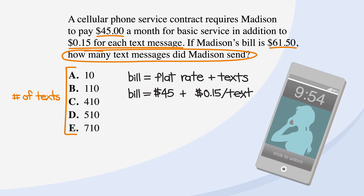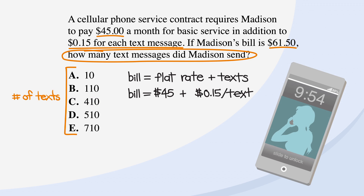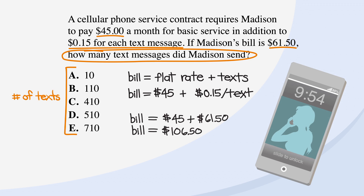Remember, our next step is to start with the middle choice, answer C, and plug in the values we're given. C says that our customer sends 410 texts. If Madison paid 15 cents per text, she paid 410 times 15 cents, or $61.50 for the text messages. That sounds like it matches, right? Not so fast — she also has to pay a flat rate of $45 per month. So in total, she actually pays $61.50 plus $45, or $106.50. That's way too big.